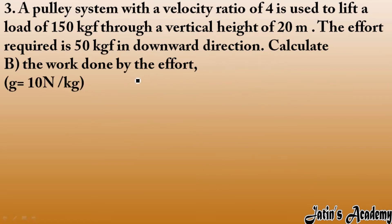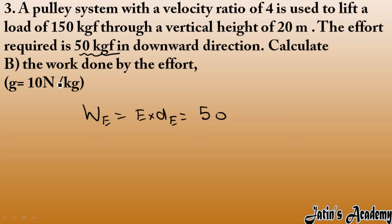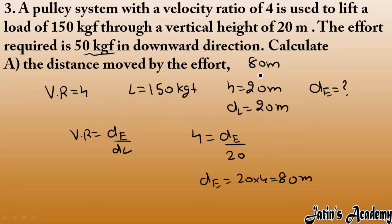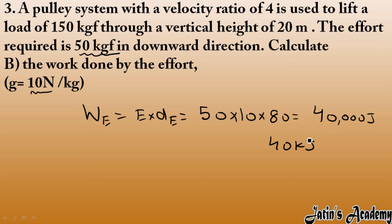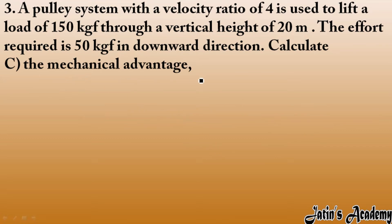Work done by effort equals effort × displacement of effort. Effort is 50 kgf, which must be converted to Newtons by multiplying with g. Displacement of effort is 80 meters. So work done = 50 × 10 × 80 = 40,000 joules = 40 kilojoules.